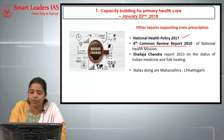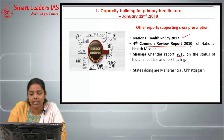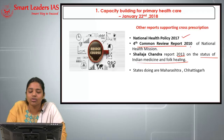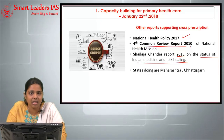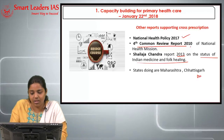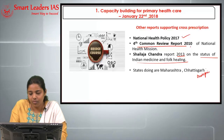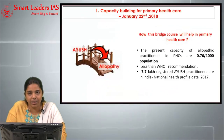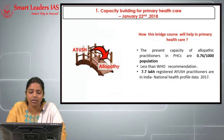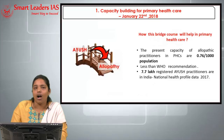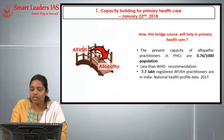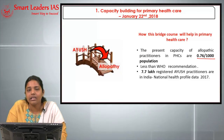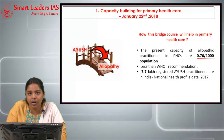The Tsailaja Chandra Report 2013 on the status of Indian medicine and folk healing also supports this. Some states like Maharashtra and Chhattisgarh are already doing this cross-prescription. According to the author, as of now, the doctor-to-patient ratio is 0.76 per thousand population, especially in primary health care centers, which is highly less than the WHO recommendation.